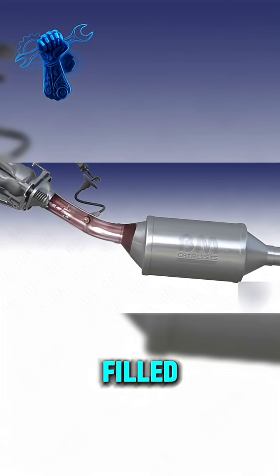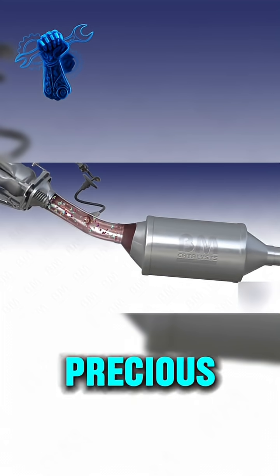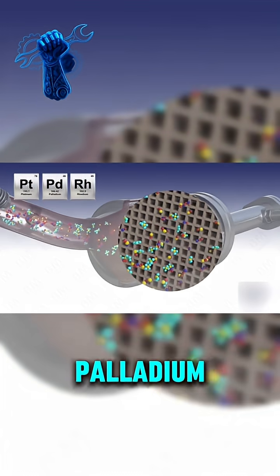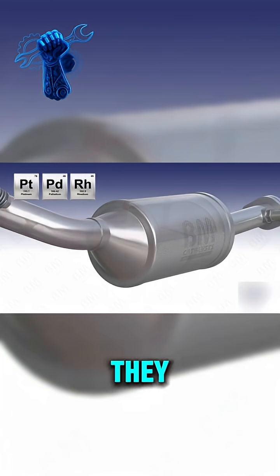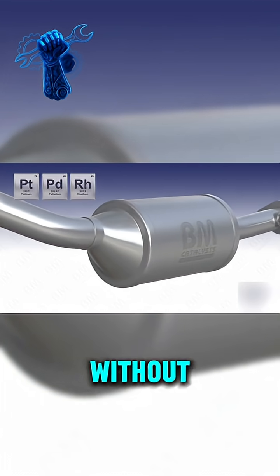Its structure is a metal chamber filled with a honeycomb core coated in precious metals like platinum, palladium, and rhodium. These metals act as catalysts. They trigger chemical reactions without getting used up.